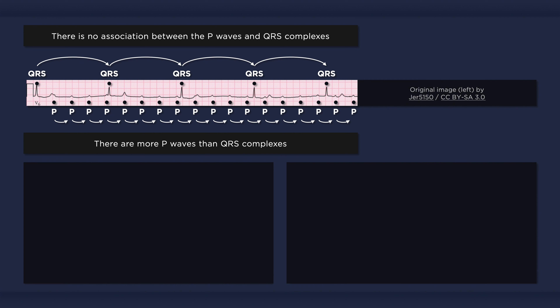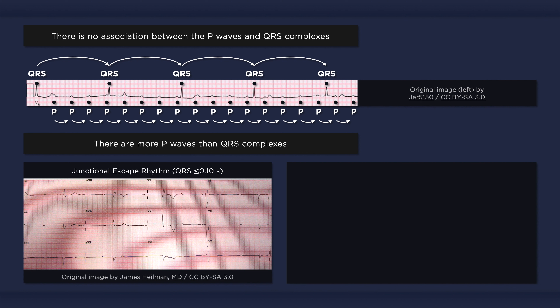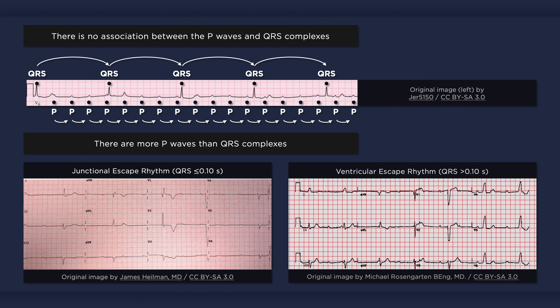In this rhythm strip, the QRS complex is rather narrow. The morphology of the QRS complexes and the ventricular rate depend on the location of the escape pacemaker. When the block occurs at the level of the AV node and the escape pacemaker is in the AV junction, a junctional escape rhythm appears with a narrow QRS complex and a rate usually between 40–60 beats per minute. When the block occurs below the AV node and the escape pacemaker is in the ventricles, a ventricular escape rhythm appears with a wide QRS complex and a rate usually between 20–40 beats per minute or less. Clinically, patients with a ventricular escape rhythm are usually more compromised.